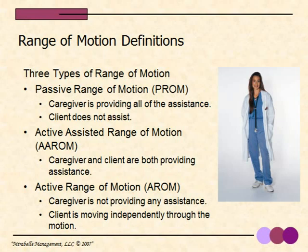The second type of range of motion is active assistive range of motion. Active assistive range of motion is when the client and the caregiver are performing the range of motion together. This is really great when a client can start the motion but can't get to the far extremes of the motion.